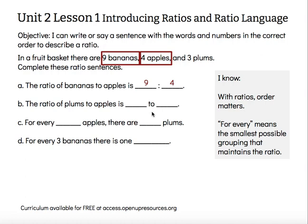Letter B: the ratio of plums to apples is blank to blank. I have three plums and four apples, so the ratio of plums to apples is three to four. Plums was listed first, so three, which goes along with plums, is also listed first.